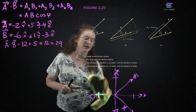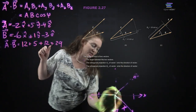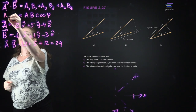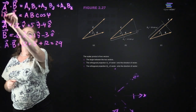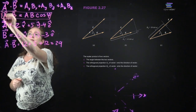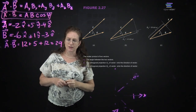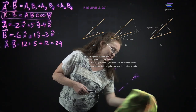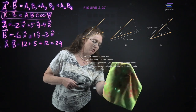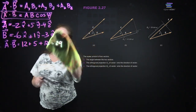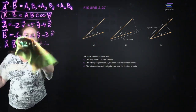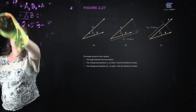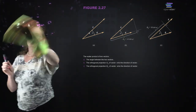Sear into your brain two things: first, the notation A dot B equals AB cosine theta. Second, if two vectors are perpendicular, the dot product is equal to zero. That will be a very useful fact for later problems.